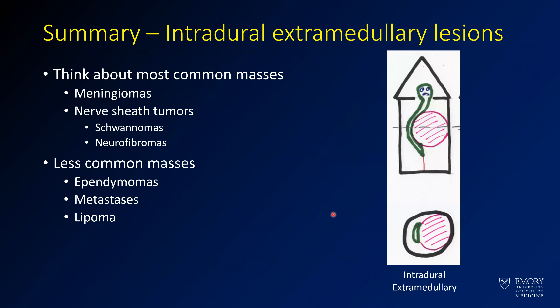In summary, when dealing with intradural extramedullary lesions, the cord is smashed to the side. Think mainly about meningiomas and nerve sheath tumors, and less common masses like ependymomas, metastases, and lipomas.